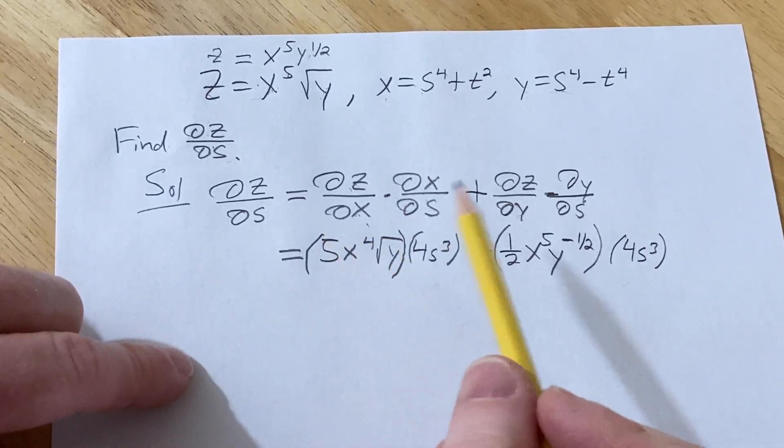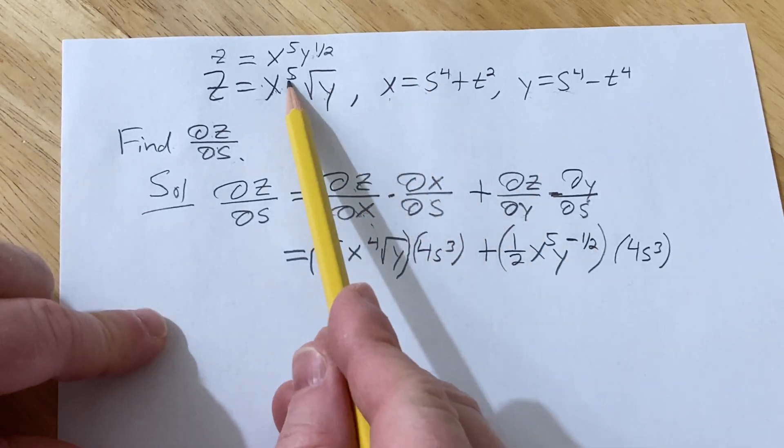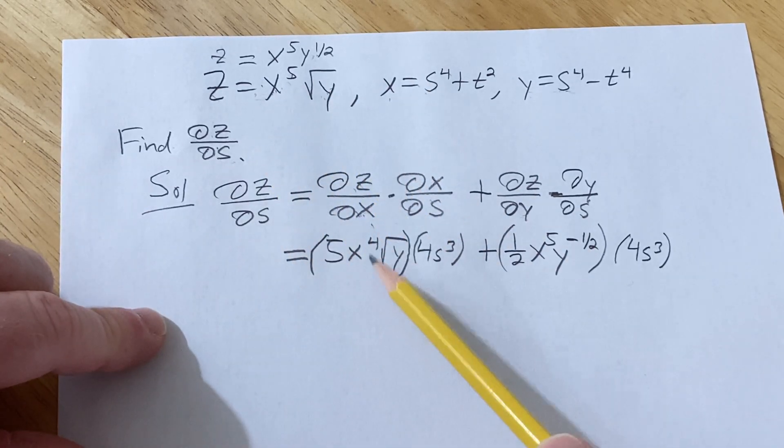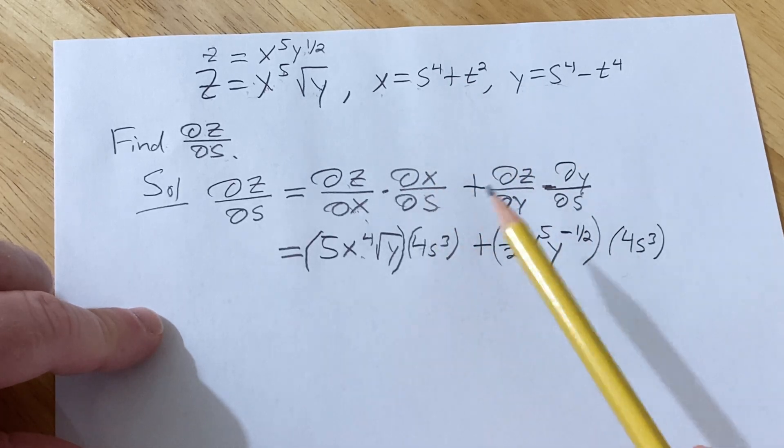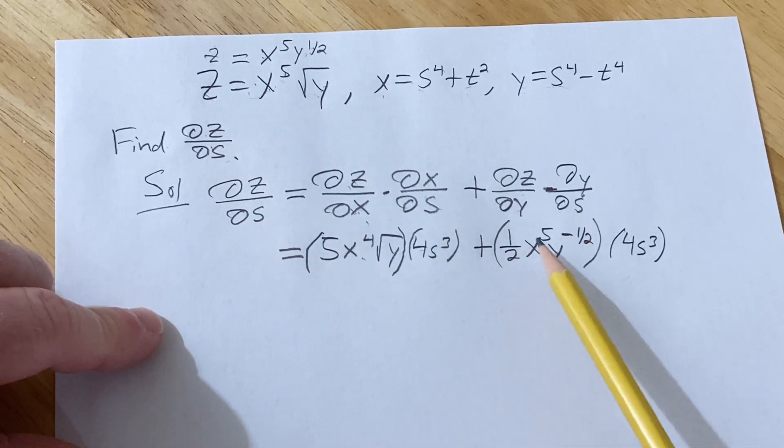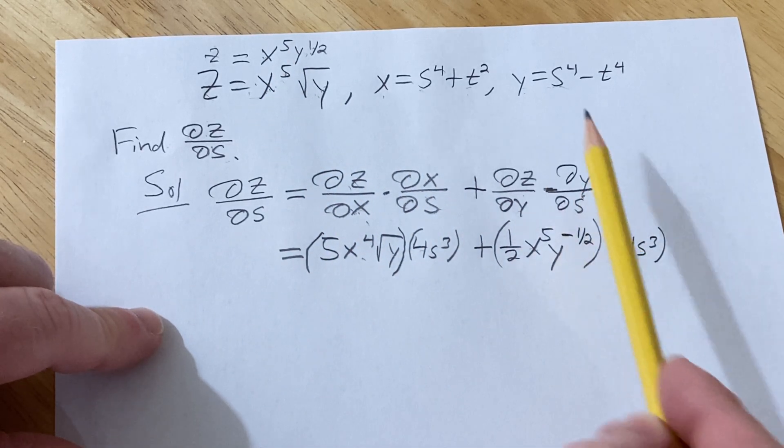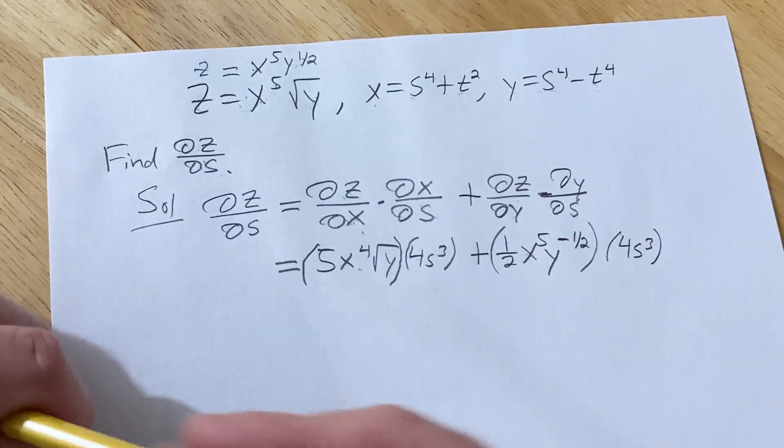All right let's just check that we did this correctly. So the partial of z with respect to x: 5x to the fourth square root of y, del x del s 4s cubed, that's going to be zero so good stuff. Del z del y: bring down the one half, subtract one, this is a constant it hangs out, looks good. Del y del s: 4s cubed, derivative there is zero because it's a constant and so we're all good.